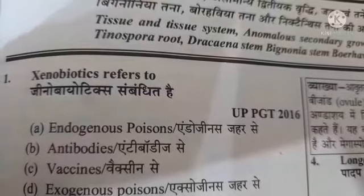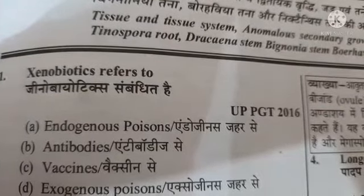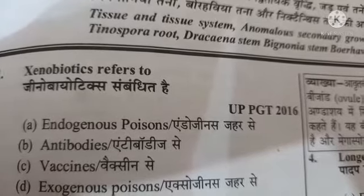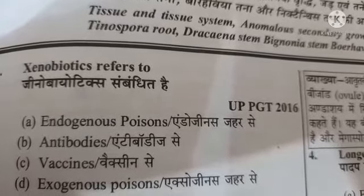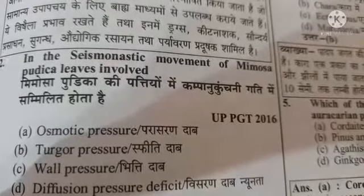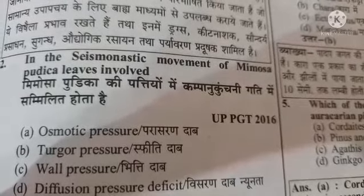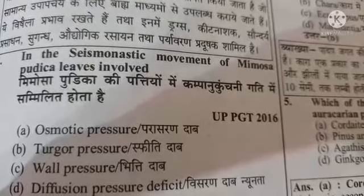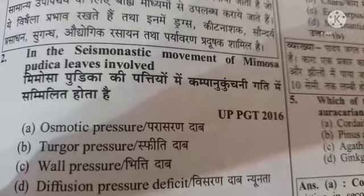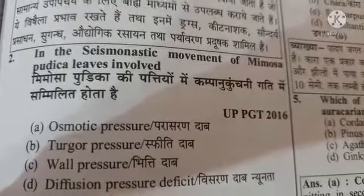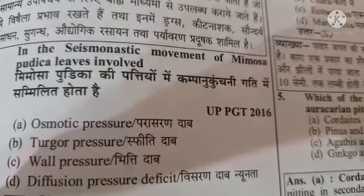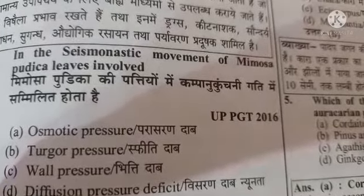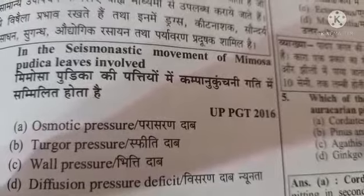Xenobiotics refers to: option A endogenous poisons, option B antibodies, option C vaccines, option D exogenous poisons. The answer is option D, exogenous poisons. Next question: in seismonastic movement of Mimosa pudica leaves, which pressure is involved? Option A osmotic pressure, option B turgor pressure, option C wall pressure, option D diffusion pressure deficit. The answer is option B, turgor pressure.